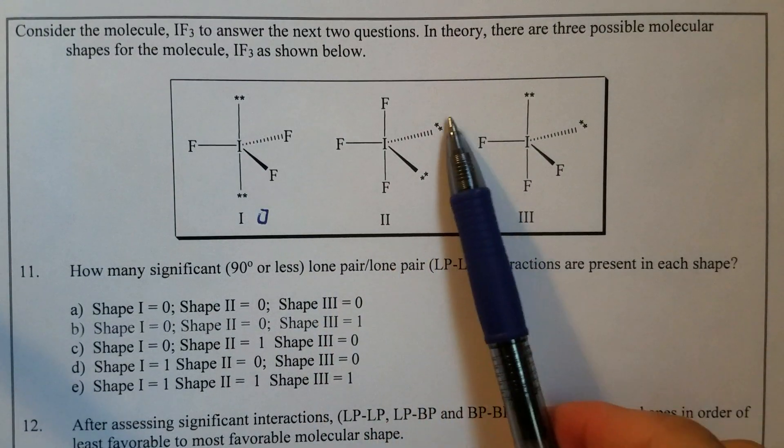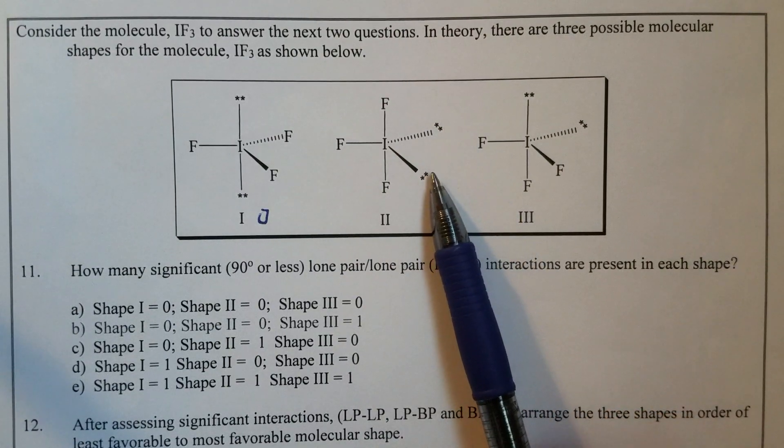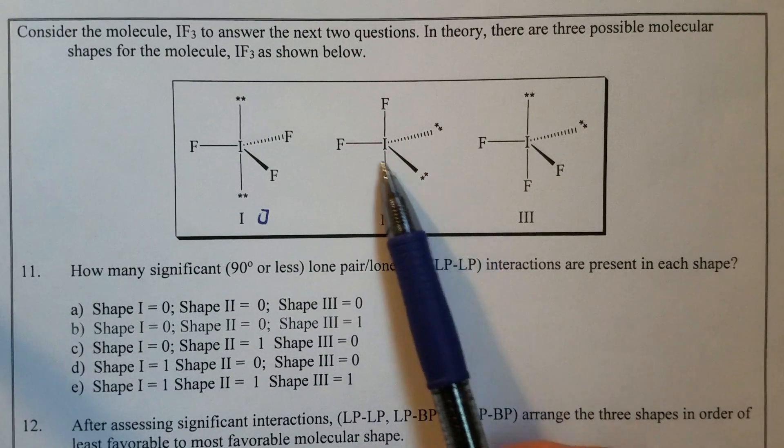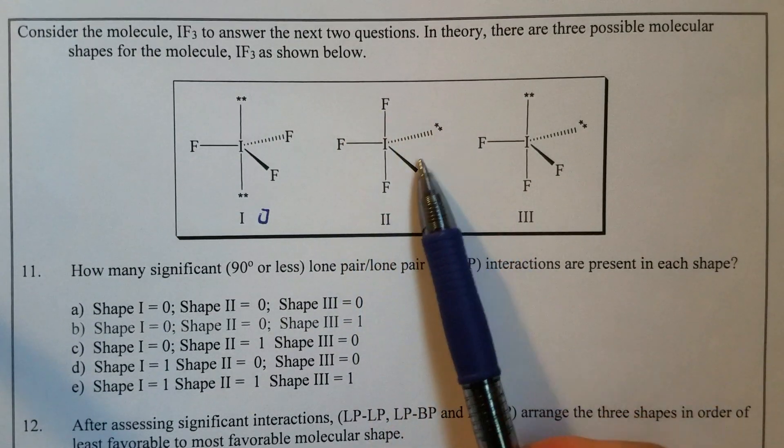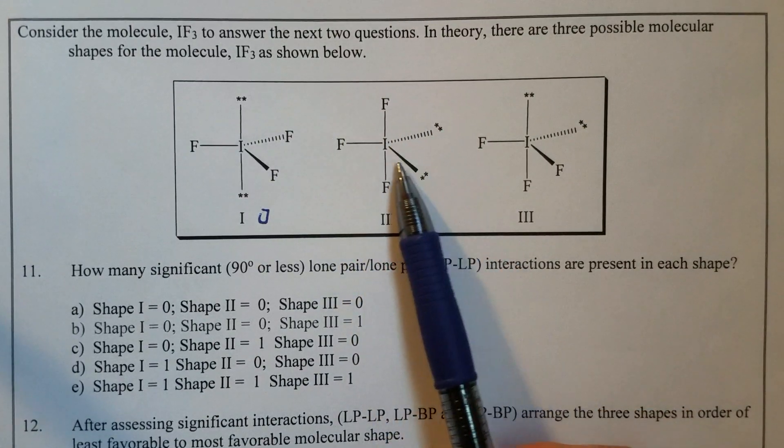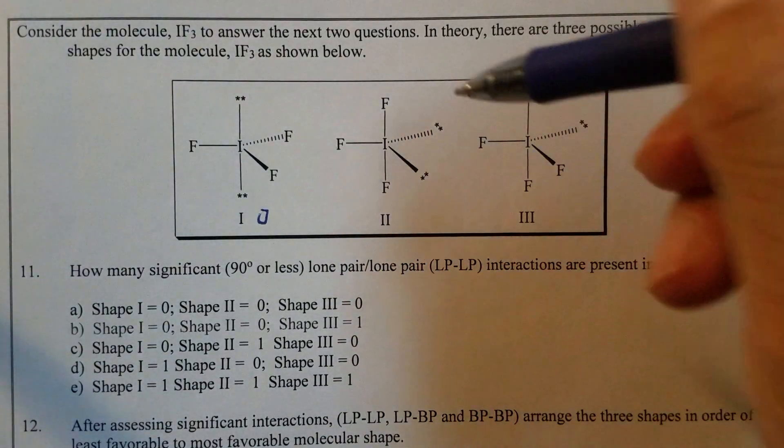Shape two. We have one lone-pair, another lone-pair. What's the angle between the two lone-pairs? The full angle right here is 360 divided by three. So that's 120 degrees.